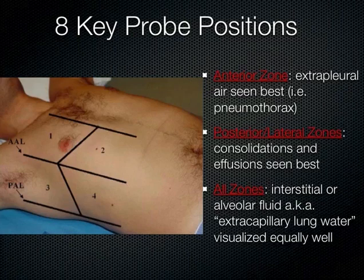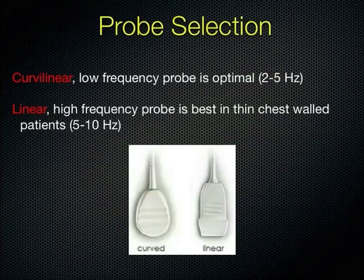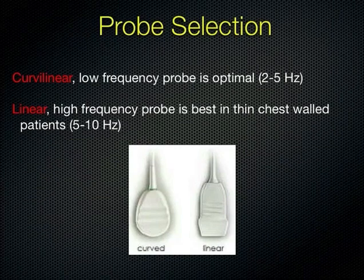Briefly, on probe selection: ideally we use the curvilinear probe, but it depends on your patient's body habitus. You can also use the high-frequency linear probe or the cardiac probe. A lot depends on whether you're looking for the forest or the trees — if you want the big picture, start with the low-frequency probe for a deeper view, then pick up the high-frequency probe for detail, such as when looking at pneumothorax.